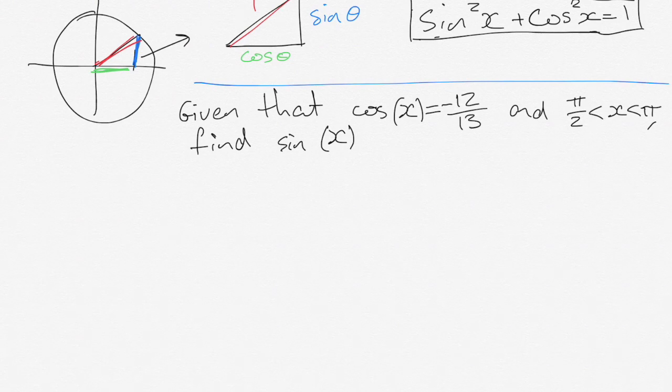You'll notice that we're not asked to find x anywhere and we're not going to in solving this problem. We don't really need to know what the angle is at all. We're only asked for what is one ratio of our angle given another ratio of our angle. This third bit of information over here tells us what quadrant we're in.